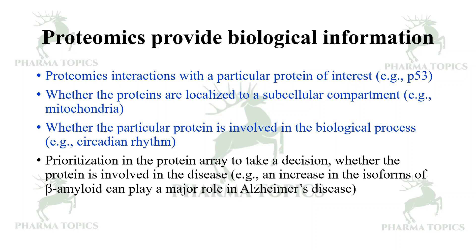Prioritization in protein arrays helps determine whether a protein is involved in a disease. In protein array technology, numerous proteins are explored, but not all may be related to the disease. For example, an increase in the isoforms of beta-amyloid can play a major role in Alzheimer's disease.